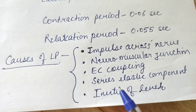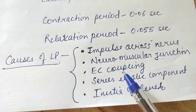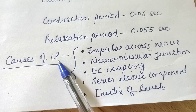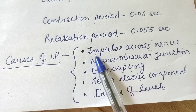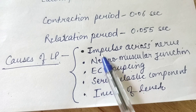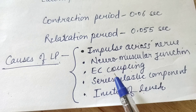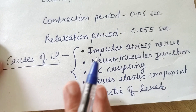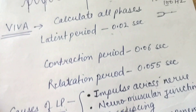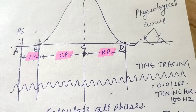So all five points are causes of latent period, which is very important. This is all about simple muscle twitch — experiment number one of amphibian physiology. If you have any query, you can comment below. Thanks for watching.